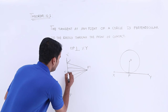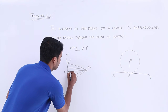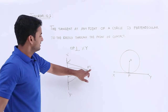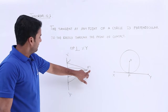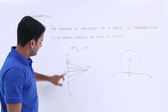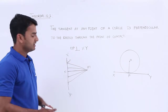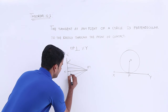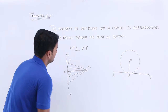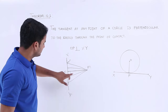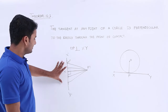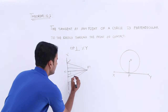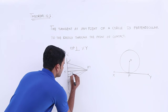This MN line is the shortest distance between point M and line X dash Y dash. And if you measure the angle between this shortest distance and the line X dash Y dash, you will get 90 degrees.